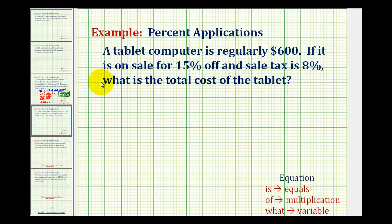So the first question will be, what is 85% of $600? We could find 15% of 600 and then subtract it from 600. But if we do it this way, we can determine the sale price in one step.